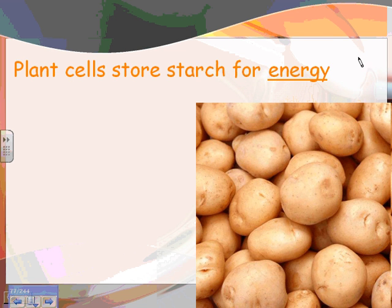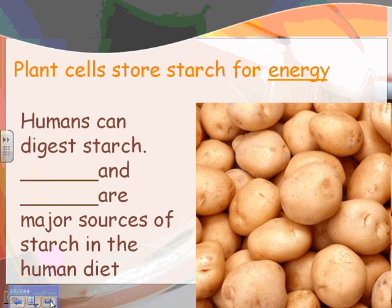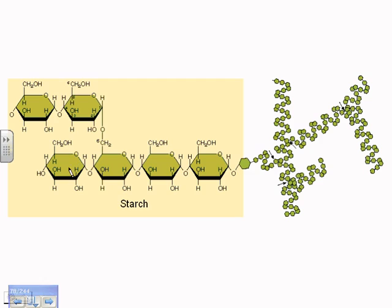Here's a potato plant — it does photosynthesis and makes glucose, then transports the sugar into its roots where it assembles the sugar into starch to create tubers, which are the potatoes you dig up and eat. They typically store this energy in the tubers, and in spring new potato plants grow from them. Humans can digest starch, and potatoes and grains like wheat are major sources of starch in the human diet.